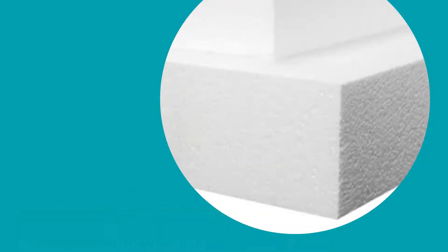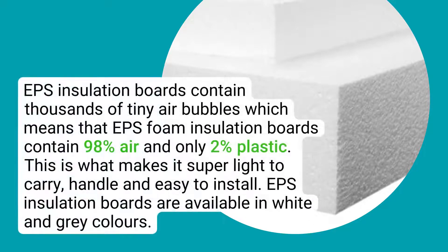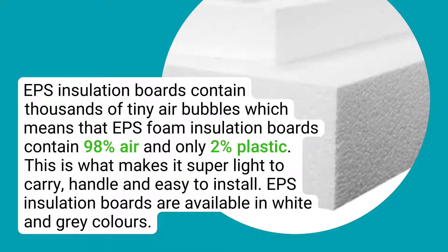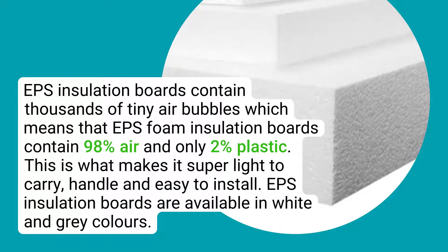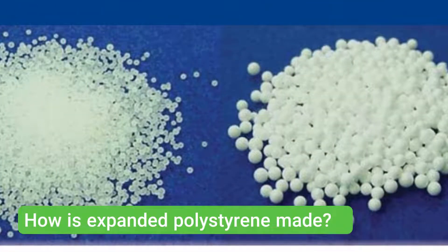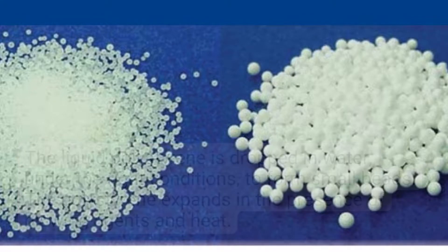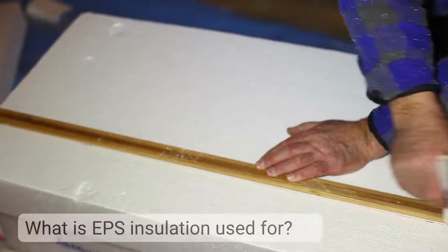What is EPS insulation? EPS is a thermoplastic that typically comes as a rigid foam insulation board or loose beads. EPS insulation boards contain thousands of tiny air bubbles, meaning they contain 98% air and only 2% plastic. This is what makes them super light to carry, handle, and easy to install. EPS insulation boards are available in white and gray colors. To make expanded polystyrene, liquid polystyrene is dropped in water under the right conditions to form small beads, which expand in the presence of blowing agents and heat. These are molded into large blocks in the presence of steam, then cut into thinner lightweight sheets using hot wire machines.